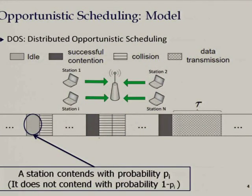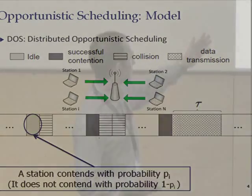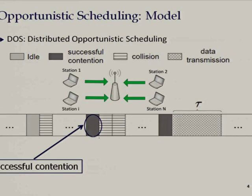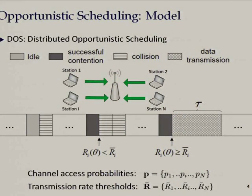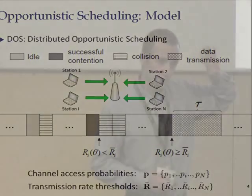As shown in the animation: it's either idle or a collision. If it's a successful contention, we measure the channel quality — basically some transmission rate. If it's below the threshold, we don't transmit; if it's above, we transmit. The behavior of the system depends on the access probability with which each station contends and the transmission rate thresholds. The main finding of the Princeton group, using optimal stopping theory, is that this threshold strategy is precisely the best strategy you can follow with distributed opportunistic scheduling.